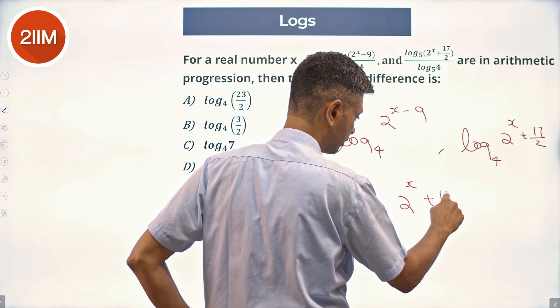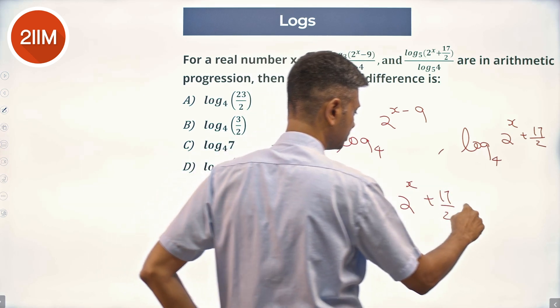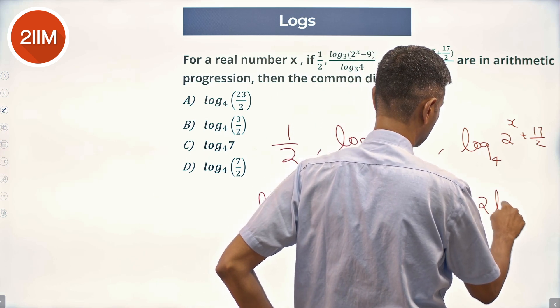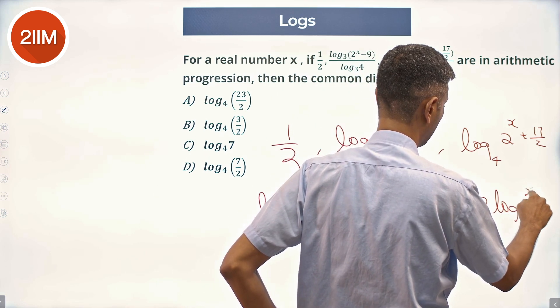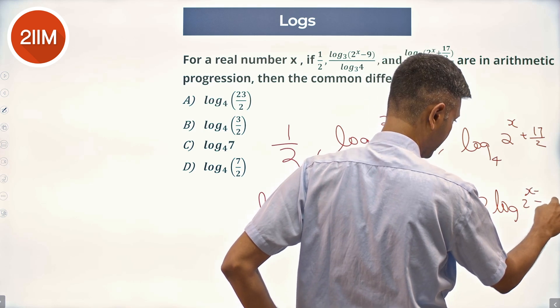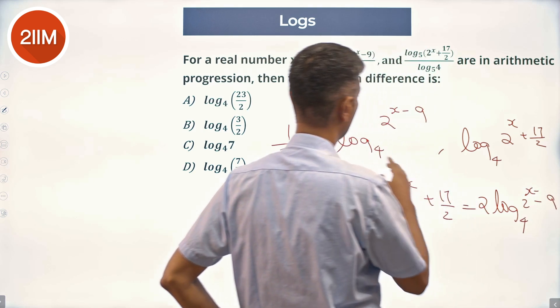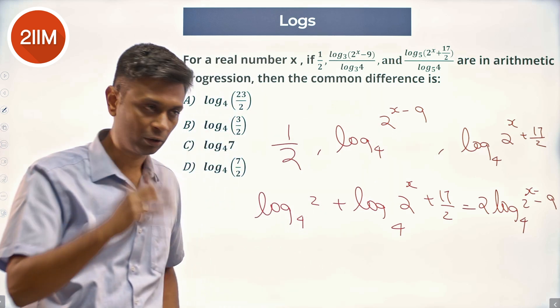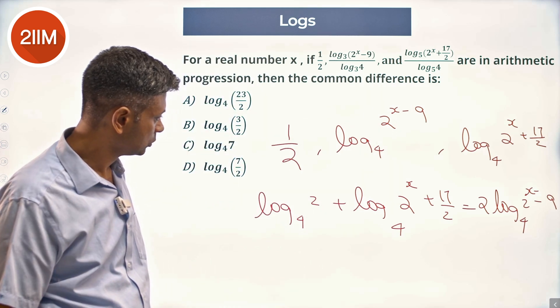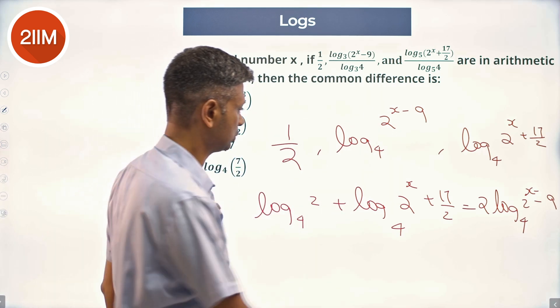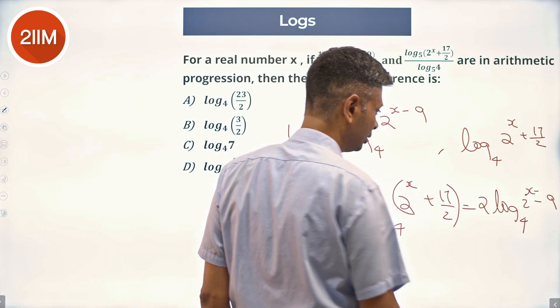...log₄(2^x + 17/2) equals 2 times log₄(2^x - 9). So this plus this - I'm going to put a bracket around this because it is very confusing - is equal to that.